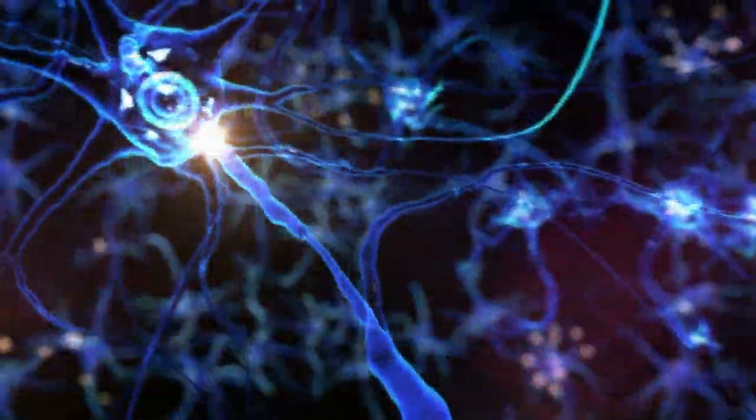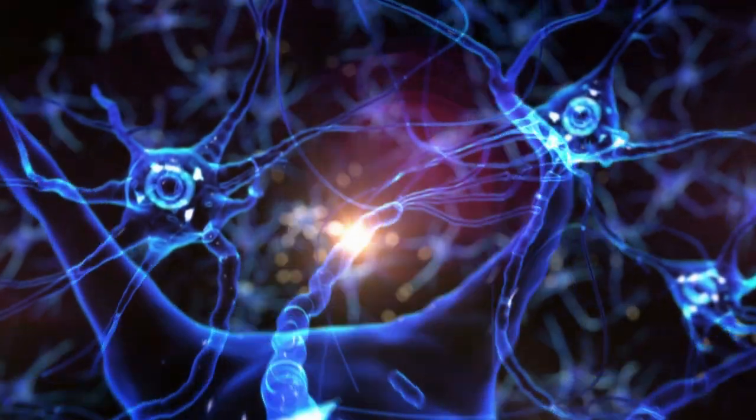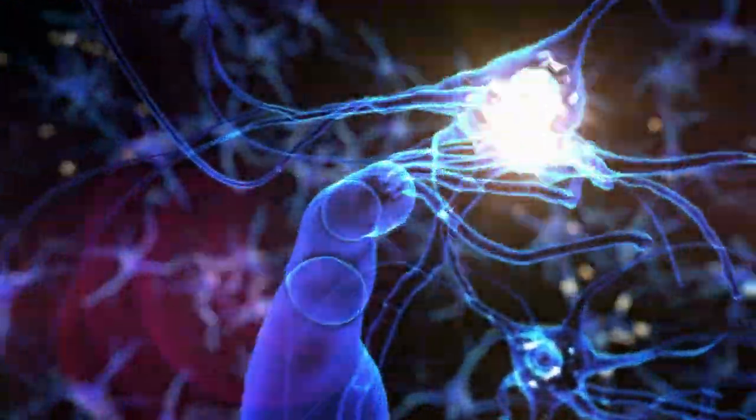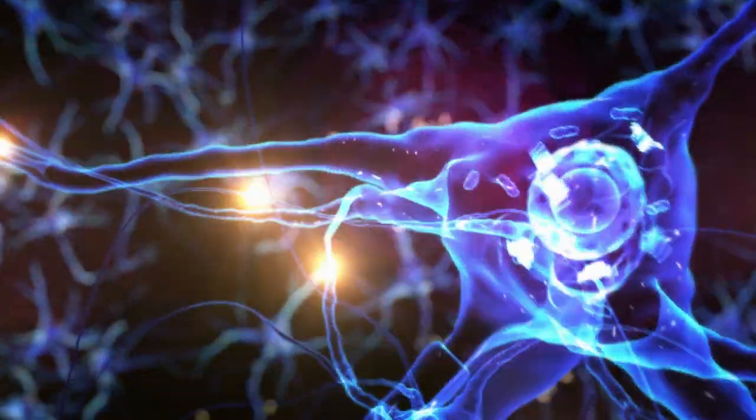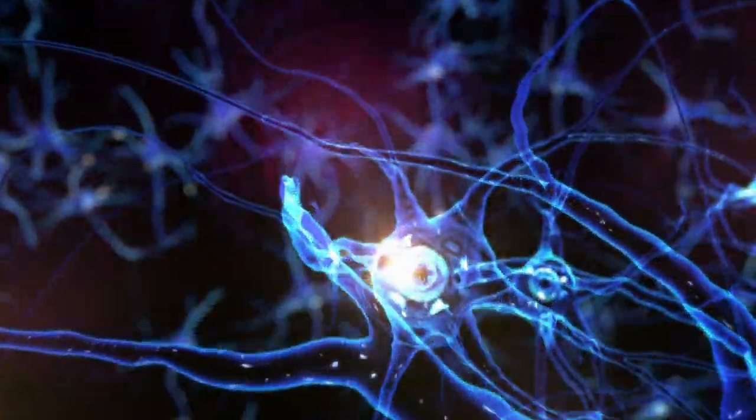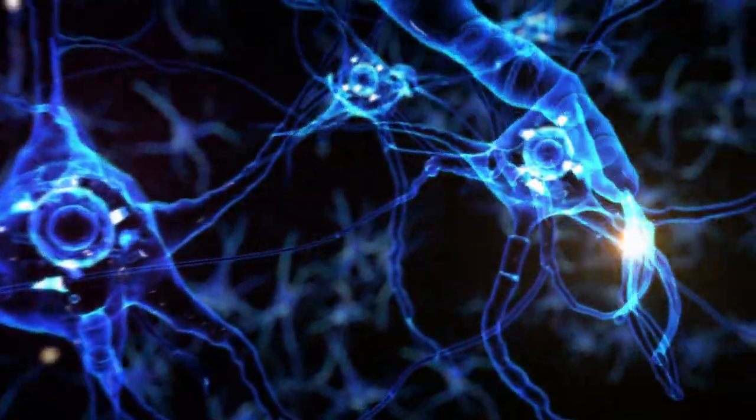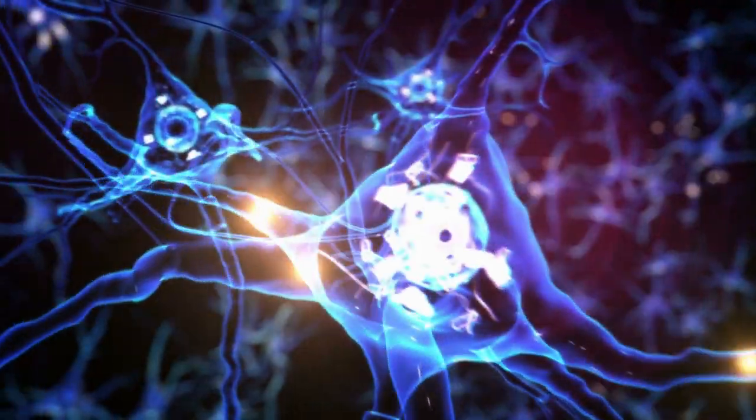They are like keys that fit into special locks in your nerve cells called receptors. This way, psychoactive drugs activate or block the release of certain molecules produced by our body, which change our mood, perception and behavior.